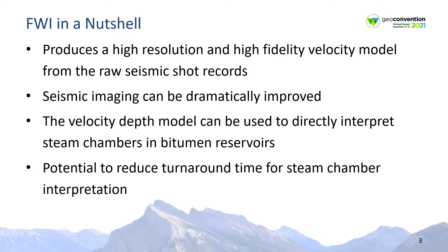The input data to the FWI algorithm are the shot records, with an objective of deriving a velocity model that would produce matching simulated shot records. On steam assisted gravity drainage projects, steam is injected into the reservoir to produce bitumen. The replacement of bitumen with a gas phase produces a significant seismic velocity anomaly. The output of the FWI process is a velocity depth model, which can be directly used for steam chamber interpretation.